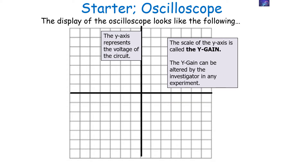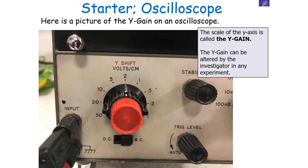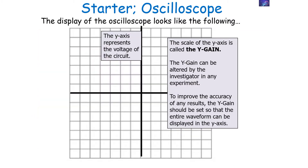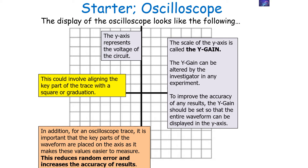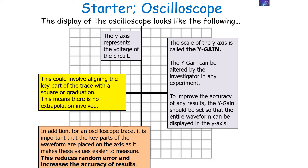The y-gain can be altered by the investigator in an experiment. To improve the accuracy of any results, the y-gain should be set so that the entire waveform can be displayed in the y-axis. It's important that the key parts of the waveform are placed on the axis as it makes these values easier to measure — this reduces random error and therefore increases the accuracy of the result. This could involve aligning the key part of the trace with a square or graduation on the oscilloscope screen, meaning no extrapolation is needed when working out answers.